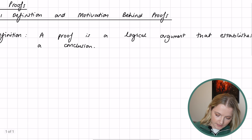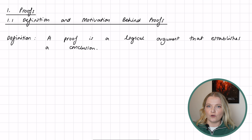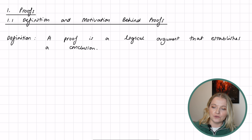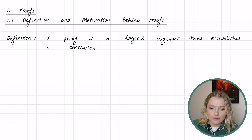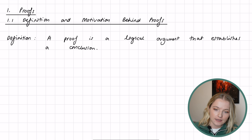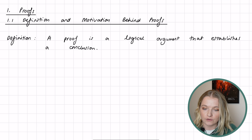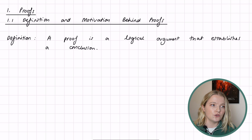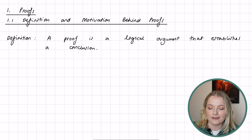An example of this: let's say I wanted to say there are infinitely many primes in mathematics. What you could do is formulate a logical argument that would establish a conclusion to show that there are infinitely many — and that's what this definition means. You can have an argument to establish something, and the thing you're establishing is what you set out to prove, such as 'there are infinitely many prime numbers.'